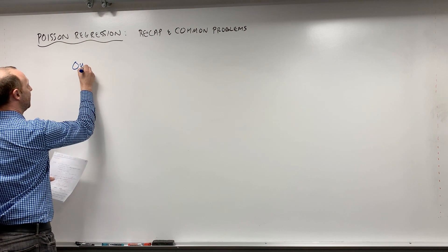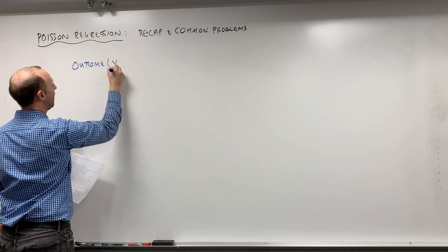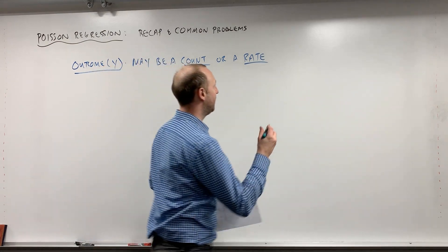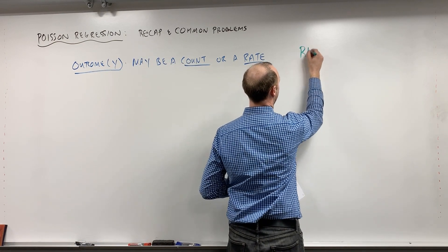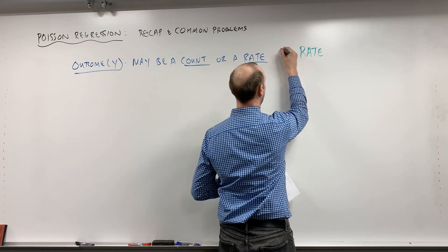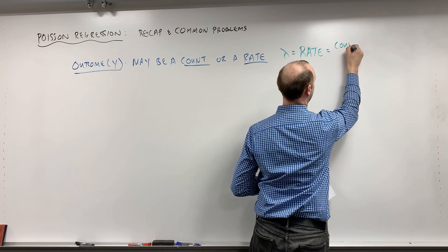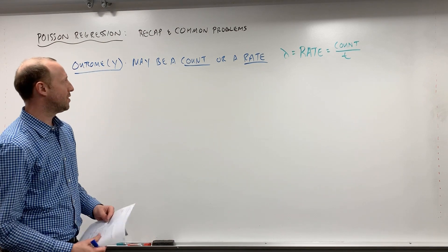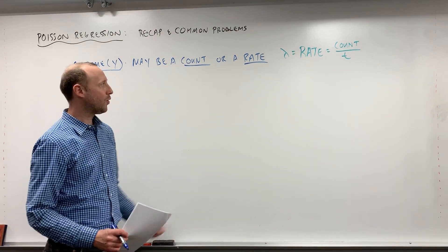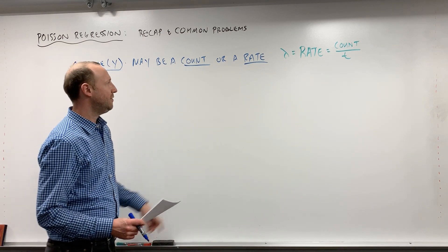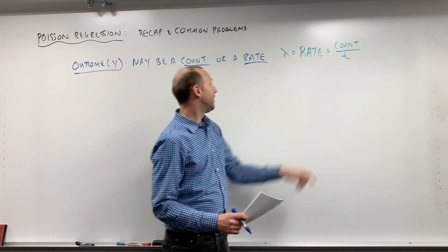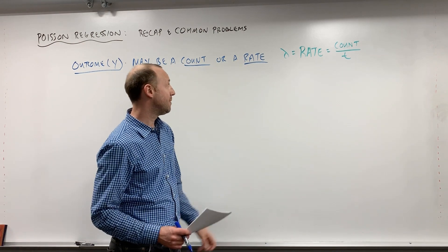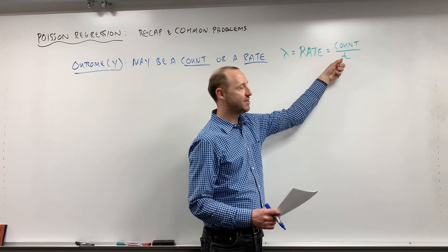A quick reminder that the outcome or y variable may be a count or a rate. The rate, which we denote lambda, is the count or the number of occurrences divided by t, the amount of time. If everyone has the exact same follow-up time we can model the count; if people have different follow-up or exposure times we need to model the rate.